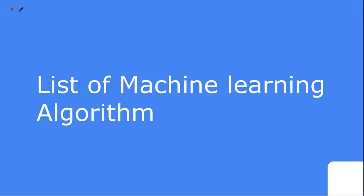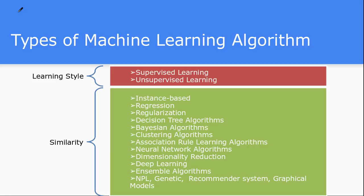Hello friends, this is the 19th video tutorial inside the video lecture series on machine learning. This lecture is about the different list of machine learning algorithms. In the last couple of videos we have seen about the two classes of machine learning algorithms divided by learning style and by similarity. In this tutorial we are going to see neural network related algorithms, dimensionality reduction related algorithms, deep learning algorithms, and ensemble algorithms. Let's start one by one.